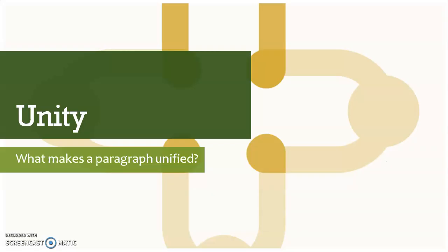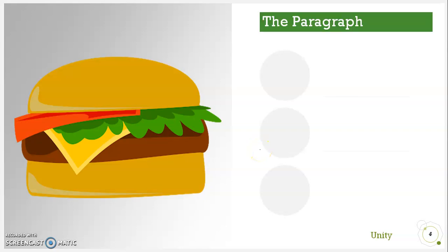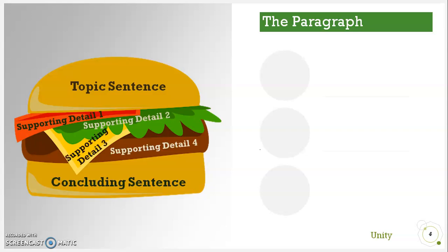What is unity and what makes a paragraph unified? To begin with, let's look at this burger. A burger is made of the upper part of a bun, the ingredients, and the lower part of the bun — this is our paragraph. This is the topic sentence, the supporting details, and the concluding sentence. Just like we cannot hold a burger without having the buns or the ingredients, a paragraph cannot be complete without the topic sentence, the supporting details, and the concluding sentence.